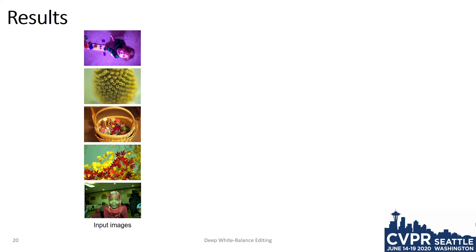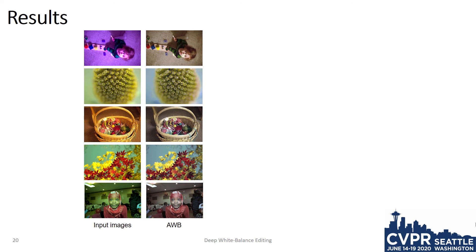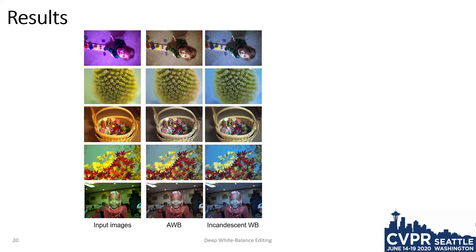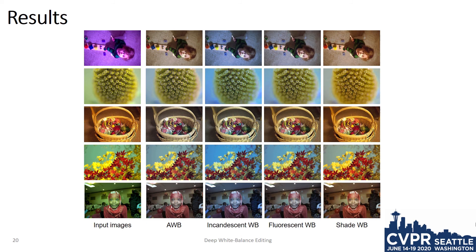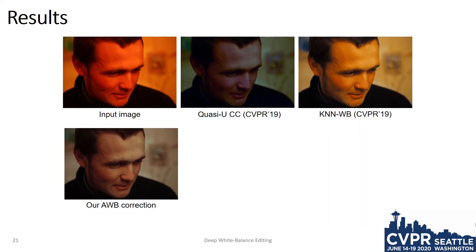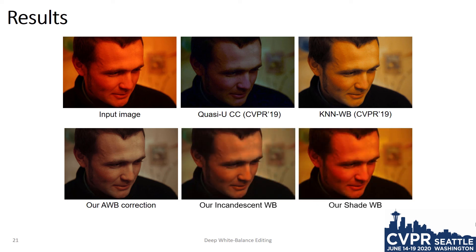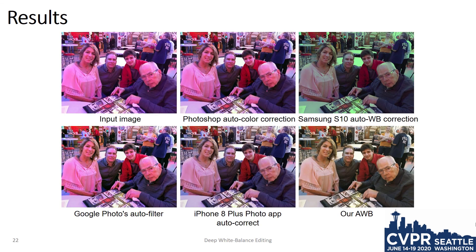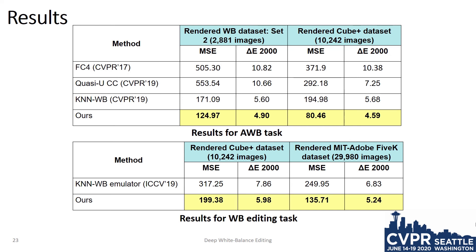Here we show several images captured with the wrong white balance. We process these with our auto white balance setting, an incandescent white balance setting, a fluorescent white balance setting, and a shade setting. Here we compare our results with recent white balance correction methods from CVPR 19 — we have the added benefit of being able to render our image to a different white balance setting. We also compare our results with several image editing software packages. Quantitatively, our method performs better than prior methods for auto white balance correction and for rendering to different white balances. See our paper for details.